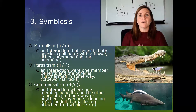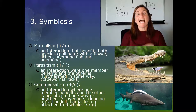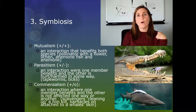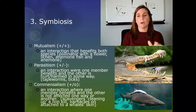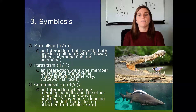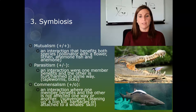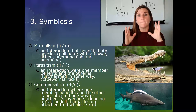The third and final type of interspecific interaction is symbiosis. Symbiosis can be win-win, win-lose, or win-neutral, depending on the type. The first type is mutualistic: an interaction that benefits both species. A bird living in a crocodile's mouth is an example of mutualism — it picks food from the crocodile's teeth, giving itself a food source while keeping the crocodile healthy. A pollinator with a flower is another example of mutualism.